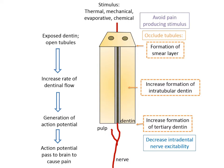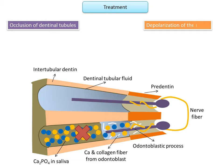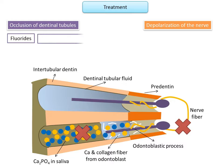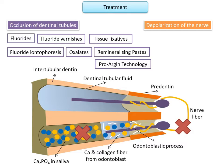A wide range of products are available for treatment. Hypersensitive dentine can be treated by two main mechanisms: occluding the open dentinal tubules, and depolarization of the nerve fibers. The first group includes fluorides, fluoride varnishes, fluoride iontophoresis, tissue fixatives, oxalates, remineralizing agents, and pro-argin technology. The second group works by depolarizing the nerve so it cannot transmit the pain response, using potassium nitrate.